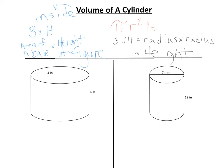Let's take a look at the first cylinder. It's kind of a short, fat one. We notice that we have a radius of 4 inches, and we know it's the radius because it only goes halfway across the cylinder. We also know that we have a height of 6 inches.